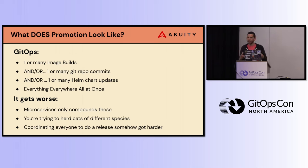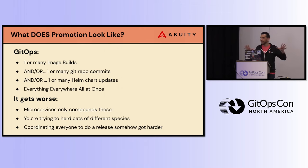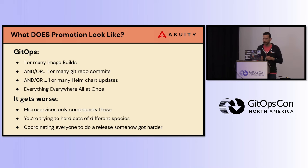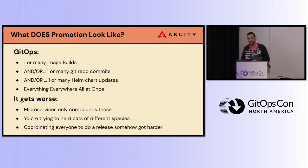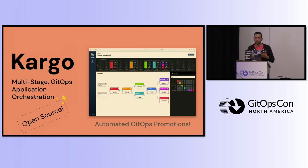Coordinating a release just somehow got harder now that I'm using GitOps and Kubernetes — it's supposed to make my life easier, but it actually got kind of harder. When I talk to people about this problem, their eyes kind of light up and they say, 'Yeah, that's a problem we're having.' At Acuity, it's a problem that not only we had, but also our customers were having. So the answer is a new open-source project called Kargo.